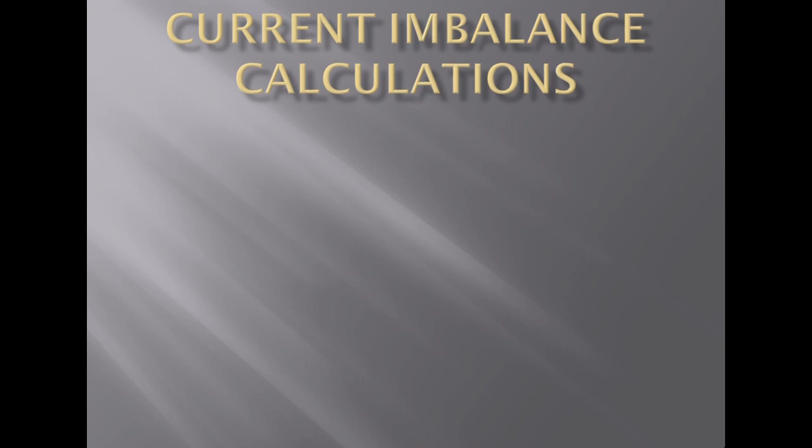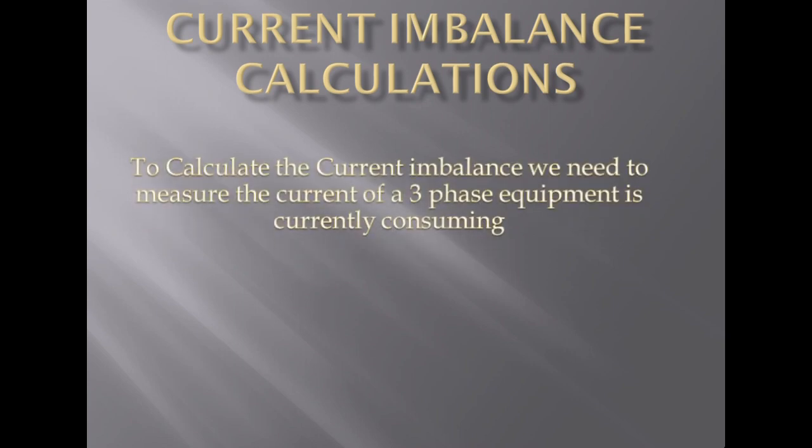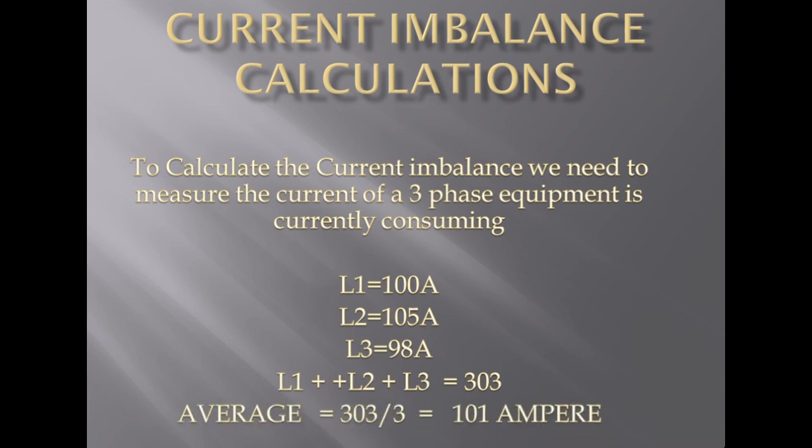In this tutorial, we will learn current and voltage imbalance calculations. To calculate the current imbalance, we need to measure the current a three-phase equipment is currently consuming. Let's assume L1 is 100 amperes, L2 is 105 amperes, and L3 is 98 amperes. By adding L1, L2, and L3 and dividing the sum, which is 303, by 3, we get the average measured current of 101 amperes.